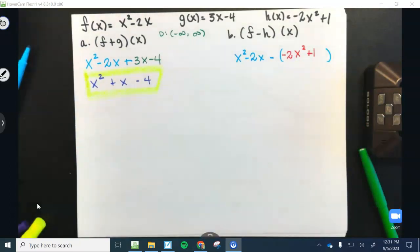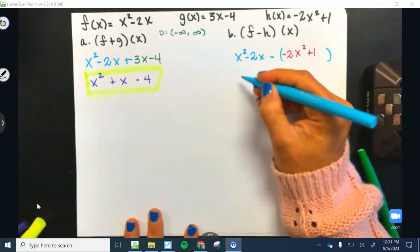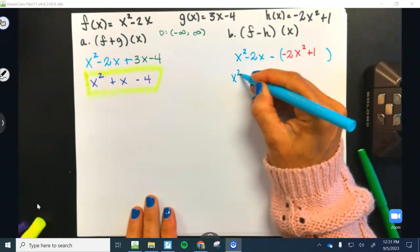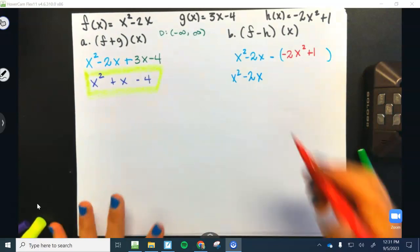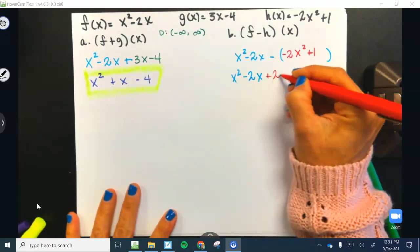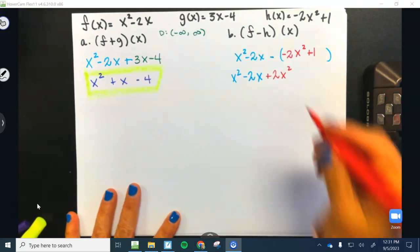And guys, remember, we are going to distribute a negative here. So this is going to turn into x squared minus 2x and then plus 2x squared and then minus 1.